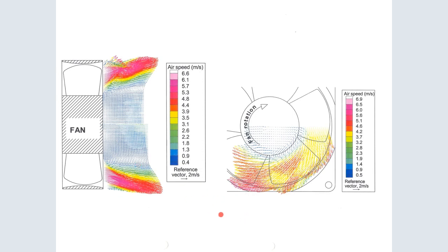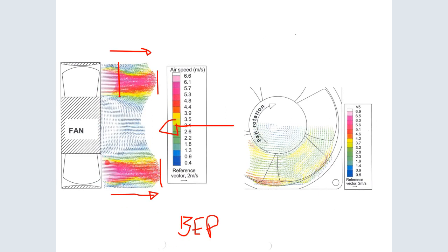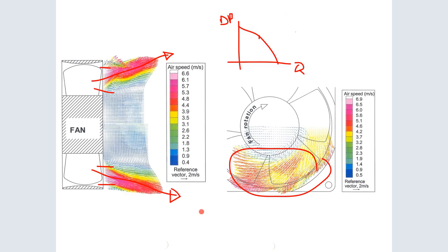Now moving off the best efficiency point — shifting to a higher pressure, lower flow region on the pump curve — we can see the angle of flow coming off is more tangential. There is a much higher tangential component and much less of the blade passage area is being used. Comparing the thickness of the jet coming off, it's much lower. So we have a lower flow rate coming through with higher tangential components, meaning the pump is now pumping less efficiently, even though it's running at the same speed.